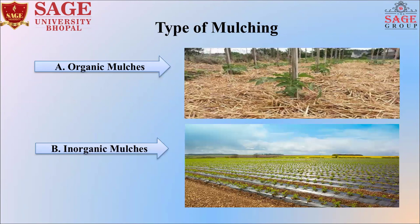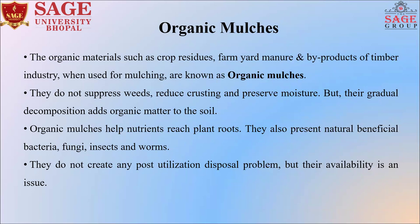The types of mulching: Mulching is mainly of two types — first is organic mulch and second is inorganic mulch. Organic materials such as crop residue, farm yard manures, and by-products of timber industries when used for mulching are known as organic mulch. They do not suppress weeds, reduce crusting, and retain moisture, but their gradual decomposition adds organic matter to the soil. Organic mulches help nutrient-rich plant roots and also support natural beneficial bacteria, fungi, insects, and worms. They do not create any post-use disposal problem, but their availability can be an issue.